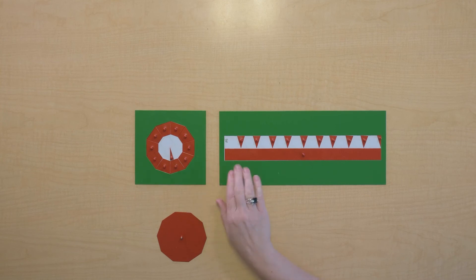So a decagon and a rectangle are equivalent when the base of the rectangle equals the perimeter of the decagon and the height of the rectangle is half the height of the apothem.